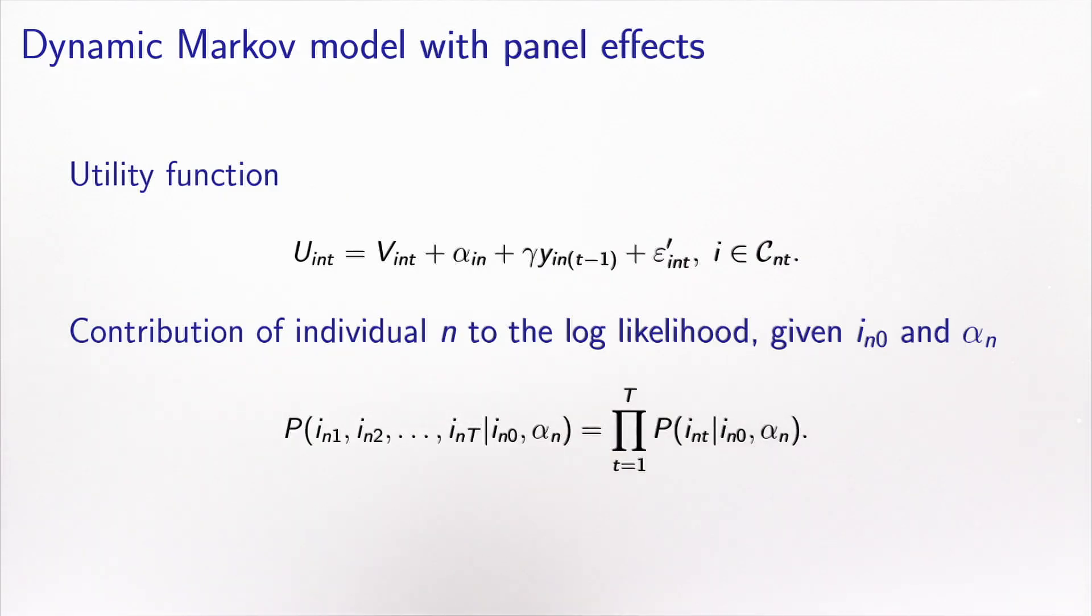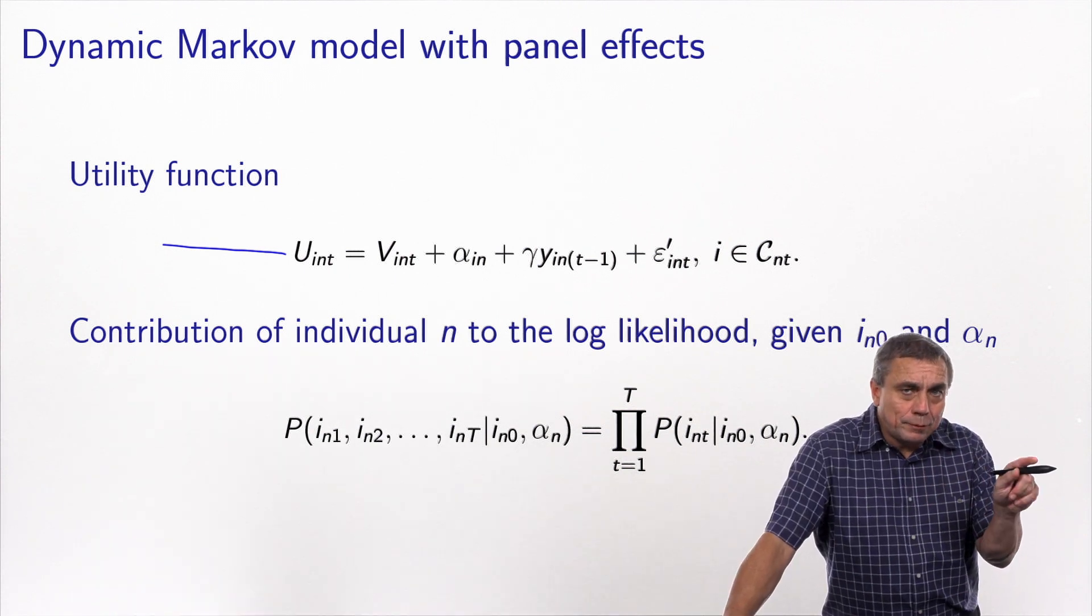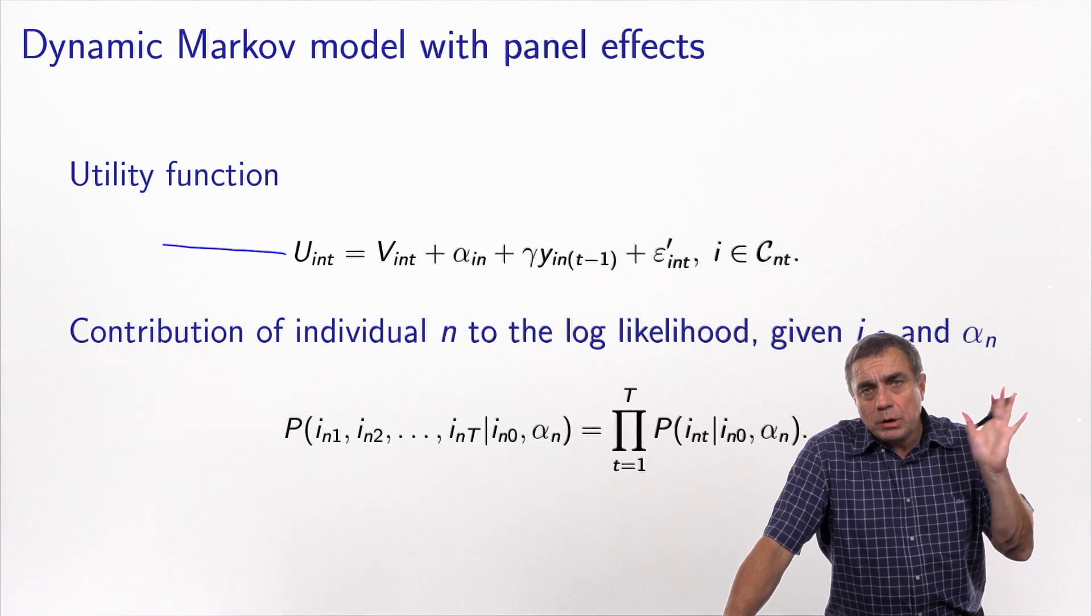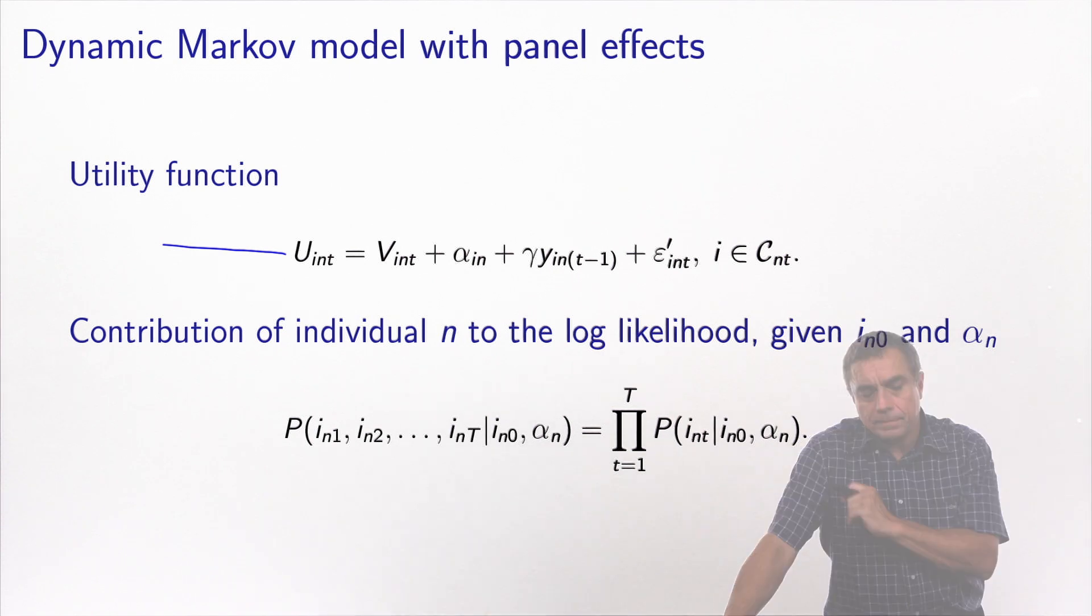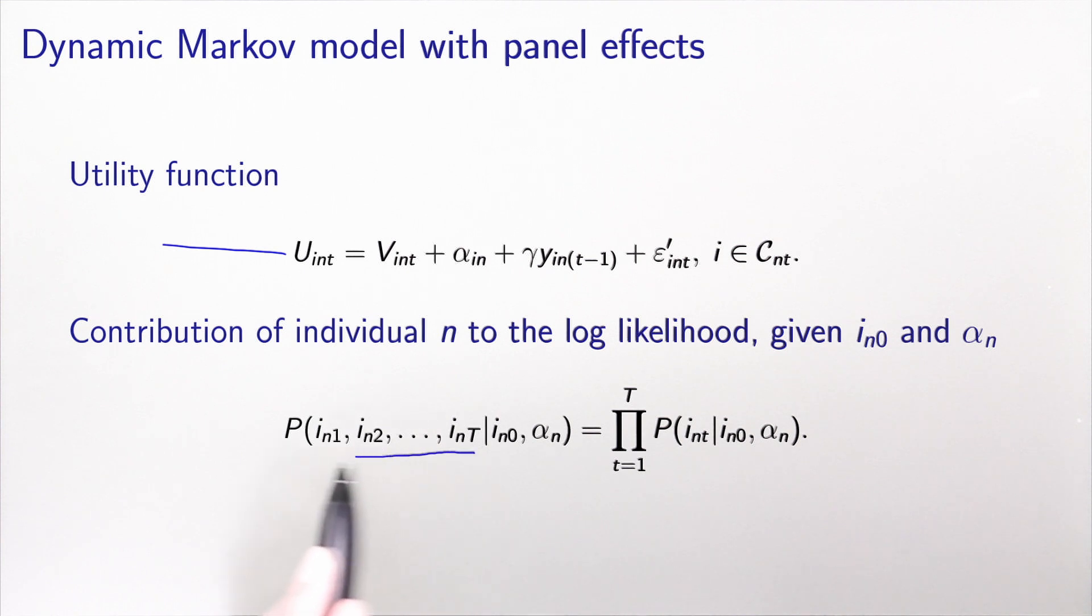So how to deal with it? So I have here the utility function, which is specified as above. And now I will have to derive the contribution of individual n to the log likelihood function. Because i and alpha, or y and alpha, are correlated, I will first derive this conditional to them so that to get them out of the equation for now. So this is what I write here. So this is the probability of the trajectory conditional to the fact that I know the first choice, and the alpha. Well in this case, the epsilon prime here is assumed to be IID extreme value, so everything is independent, and the probability of the trajectory conditional to this is simply the product of the probabilities conditional to this as well.